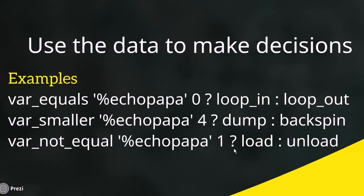Here's an example combining variables and conditional branching: 'variable equals EchoPapa 0?' — this asks, does EchoPapa equal zero? If so, loop in; otherwise, loop out. So one button can toggle looping based on the variable state. Similarly, 'smaller than EchoPapa 4?' — if EchoPapa is less than 4, do a dump; otherwise, do a backspin. Or 'not equal to EchoPapa 1?' — if EchoPapa is not 1, load the track; otherwise, unload the track.